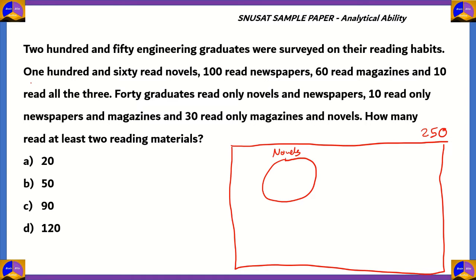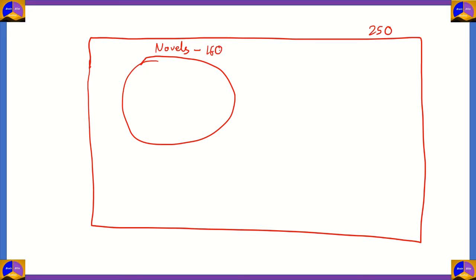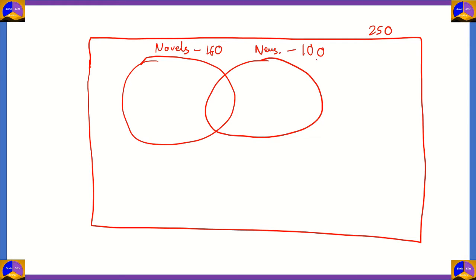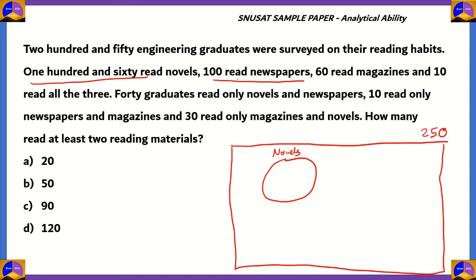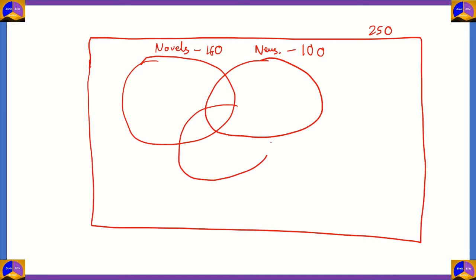Next, we have 100 people who read newspapers, so we draw a second set which overlaps with the first. That's short for newspaper, and the number of people who read newspapers totally is 100. And 60 read magazines, so next you have a third set overlapping the other two sets. This set is for magazines and the number of people who read them are 60. So now you have 160 people who read novels, 100 reading newspapers, 60 reading magazines.